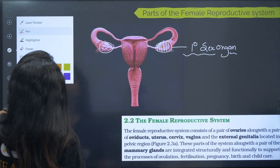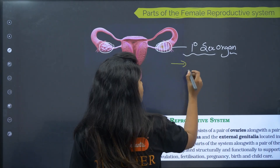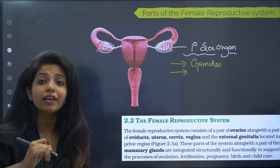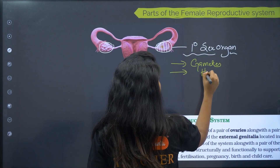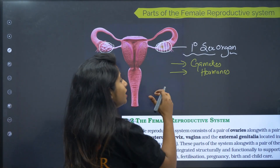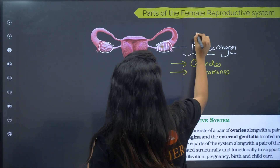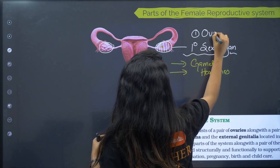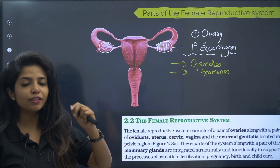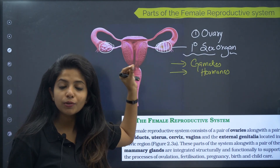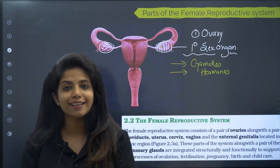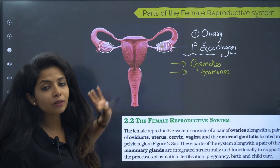This structure is responsible for production of gametes as well as the synthesis and secretion of ovarian hormones. The name of this most important structure is the ovary, and we have a pair of them in the female body. It is the primary sex organ because it produces gametes as well as the ovarian hormones needed for all the secondary sexual characteristics that a female has.